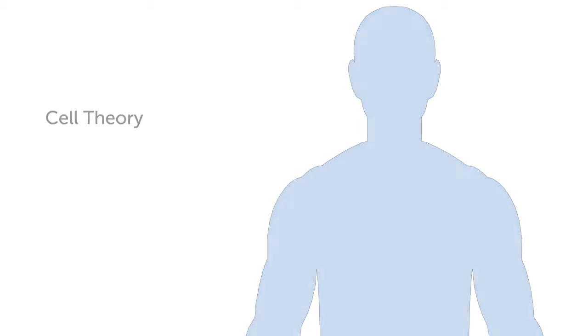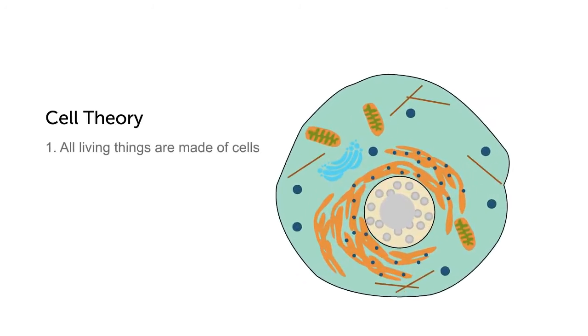As the foundation of biology, cell theory follows three statements about cells and how they behave that have been observed by scientists. Cell theory states that all living organisms are: 1. Made up of cells.